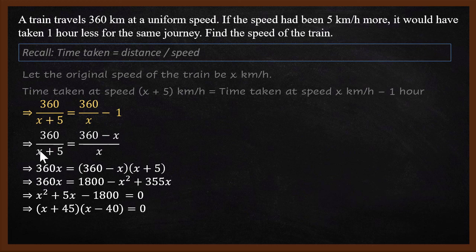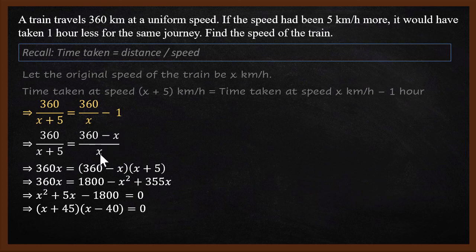The left hand side remains 360/(x+5). For the right hand side, think of the 1 as x divided by x, so it becomes (360 − x)/x. That is the first simplification. For the second simplification, we take x to the numerator diagonally opposite, and that becomes 360x.